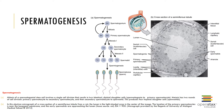Spermiogenesis is where the spermatids undergo physical maturation to form their spermatozoa or sperm, a process that takes approximately 24 days. The head and acrosome form on one end; the head contains the 23 chromosomes and the acrosome contains enzymes essential to fertilization of the egg. The neck contains both centrioles of the original spermatid. The microtubules of the distal centriole are continuous with those of the midpiece and tail.